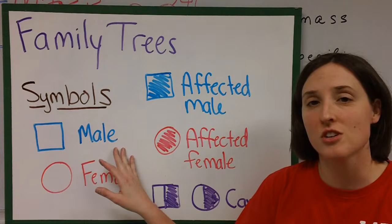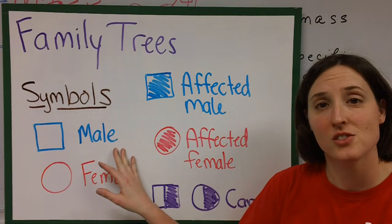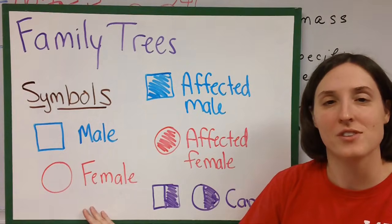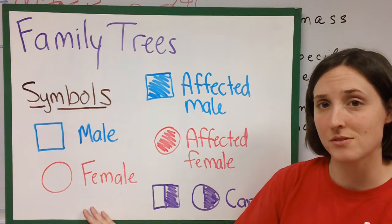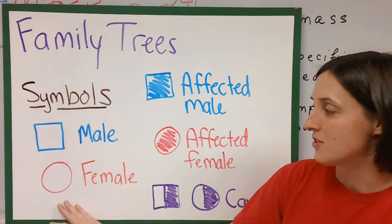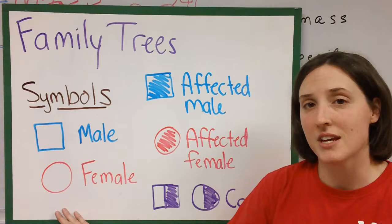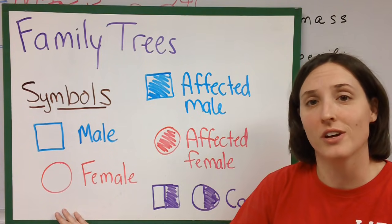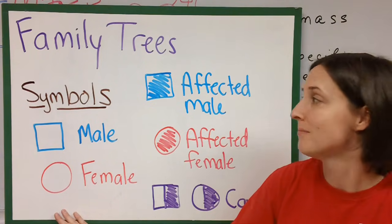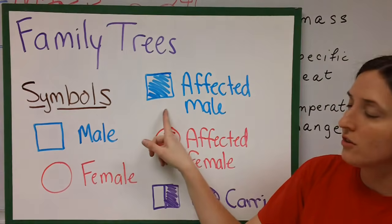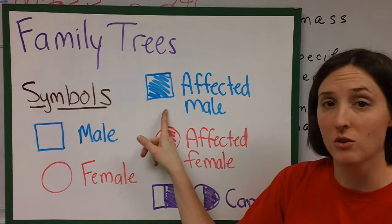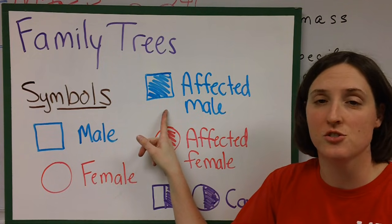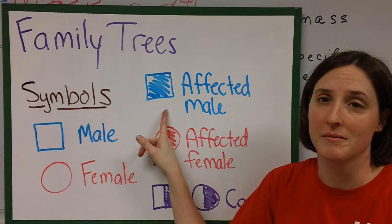Males are usually represented by squares on a pedigree chart and females are represented by circles. If the circles are empty, this means that person is not carrying the trait that we're looking for. If the circles or squares are filled in, this means that this person carries the trait that we're looking at.